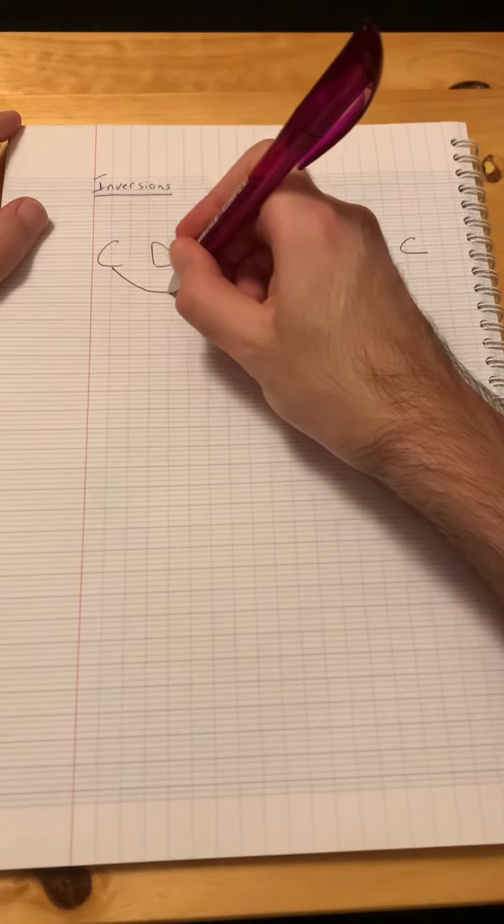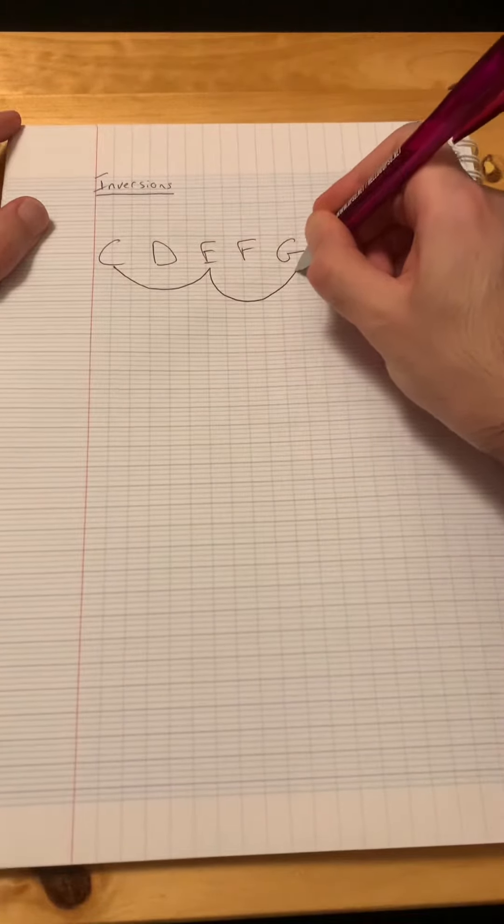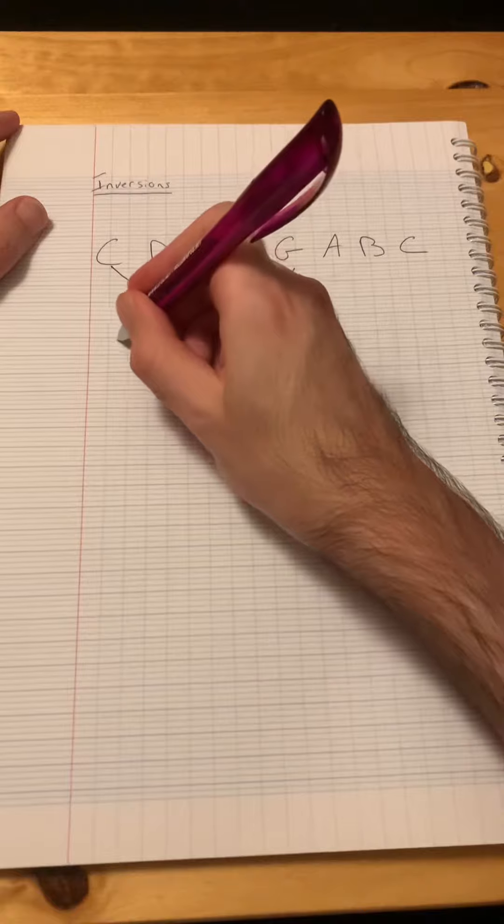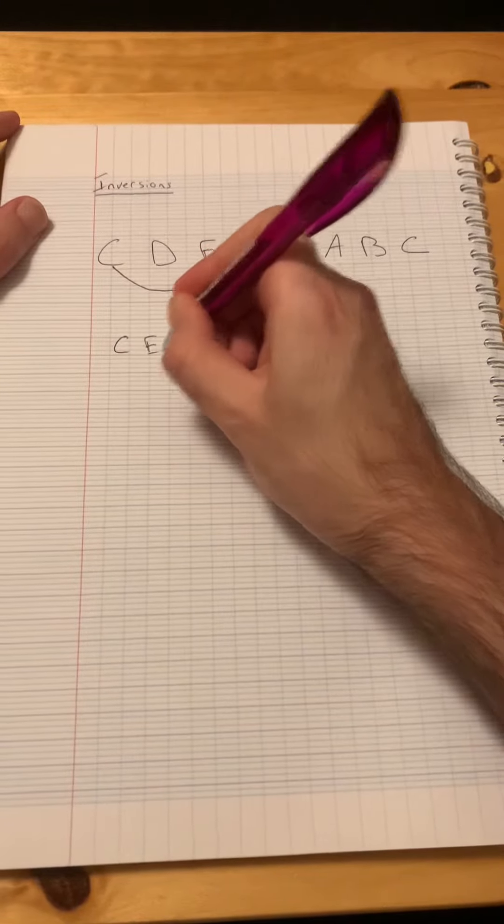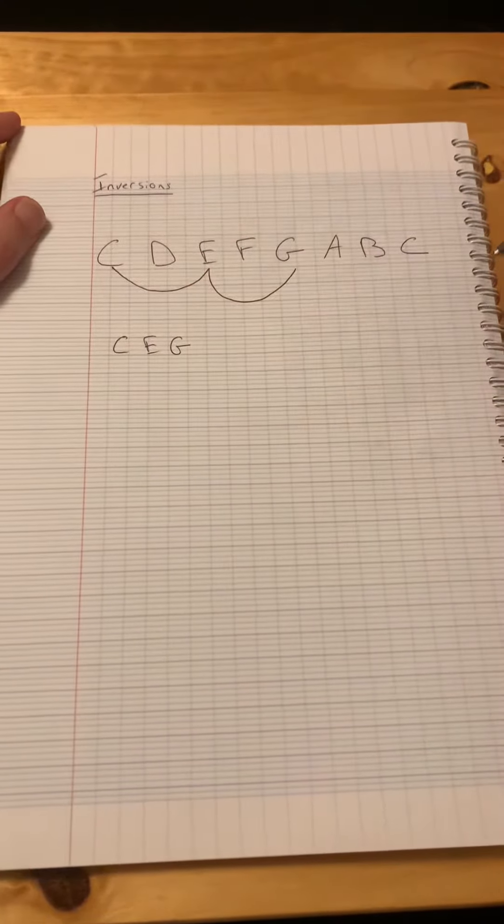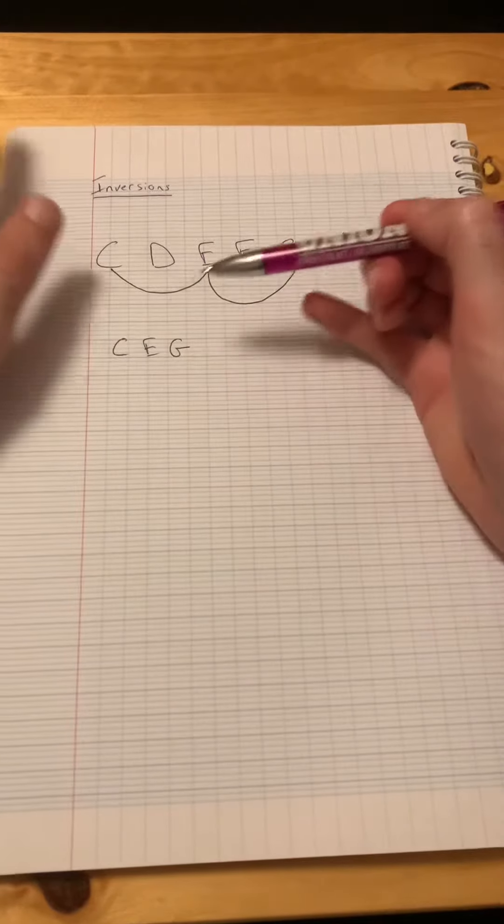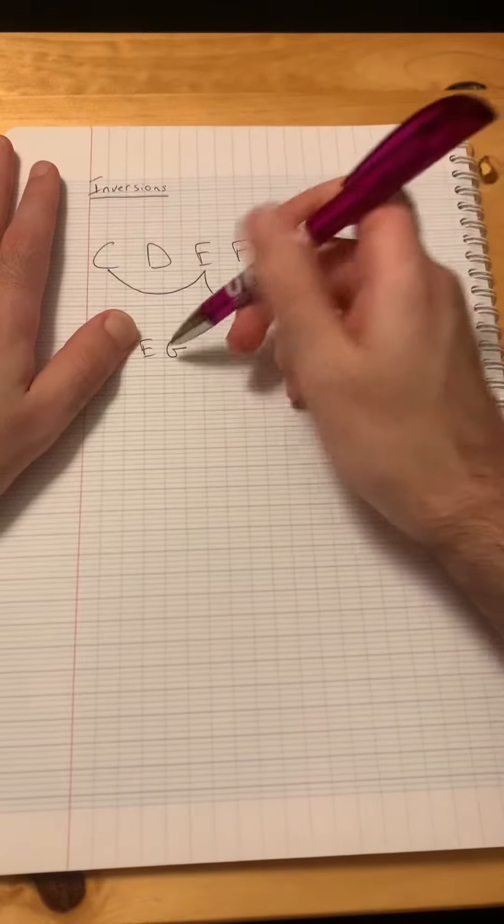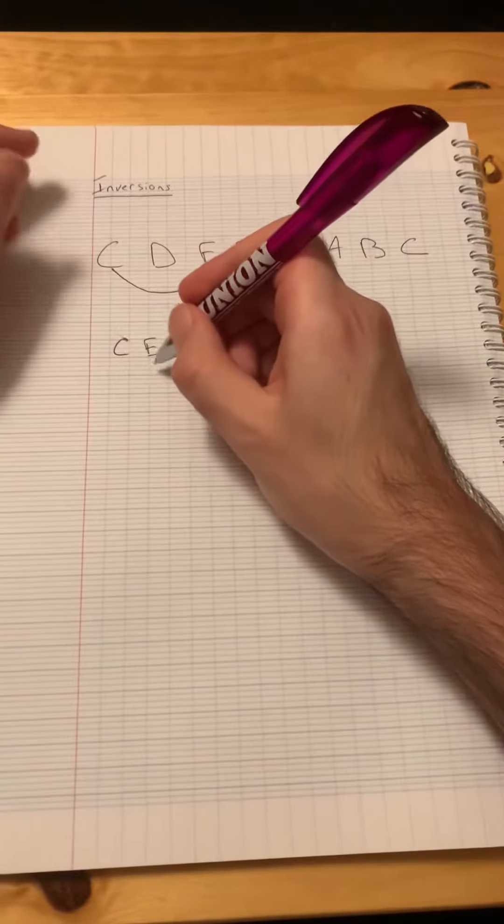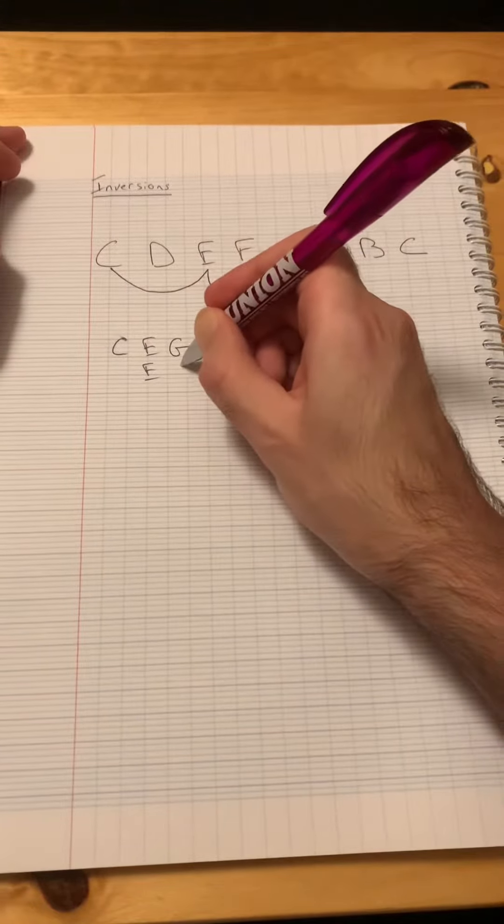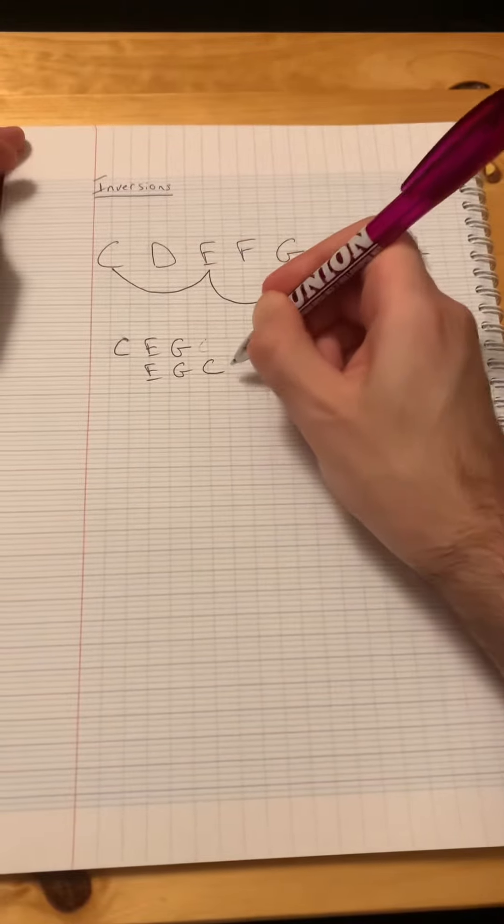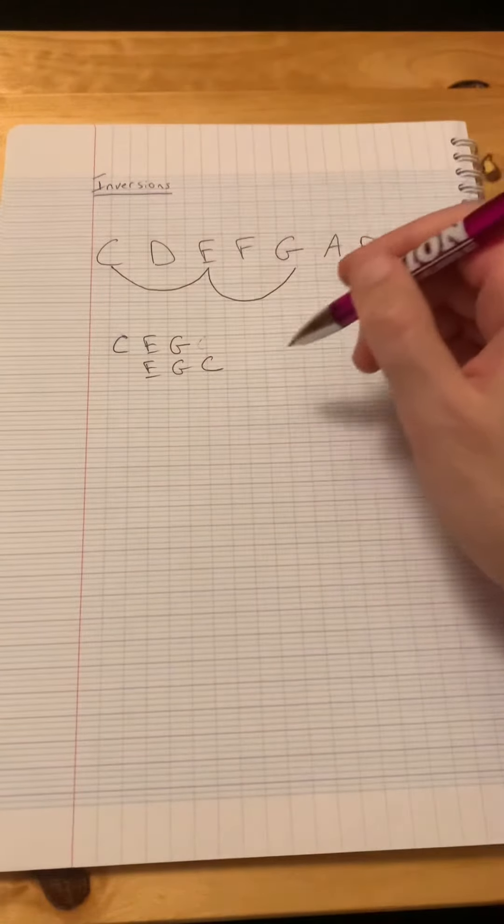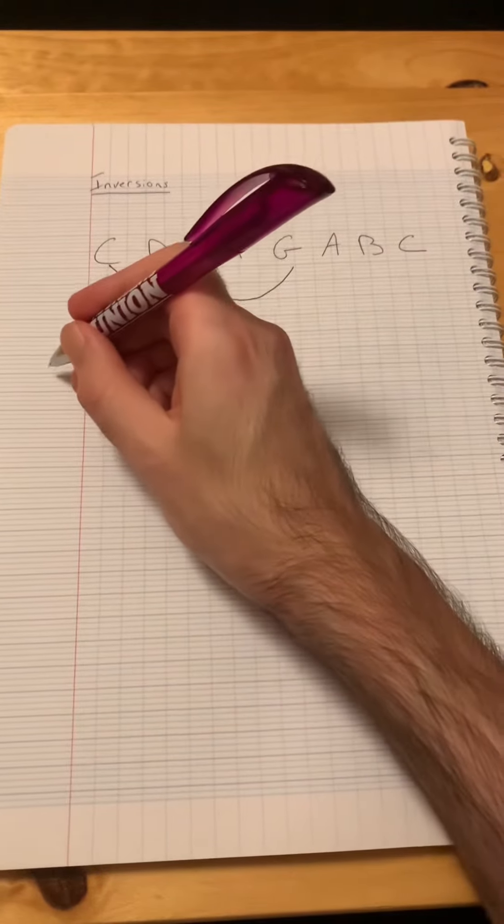Let's just take our C major chord. That would be C, E, and G. So what happens if we take this C off here and then we add it here? So E, G, C. That's what we call an inversion. That would be the first inversion.